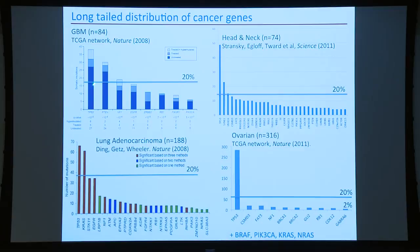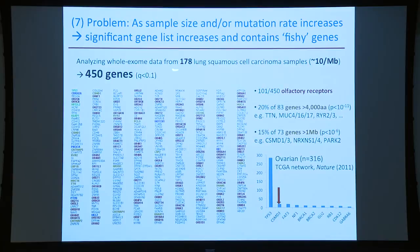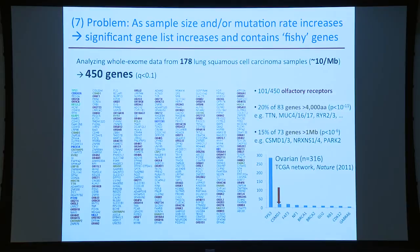Only a few genes have mutations in more than 20% of patients; most cancer genes are mutated in a smaller fraction. When we ran MuteSig on 180 lung cancers with a typically high background rate, we found 450 significant genes — including 100 olfactory receptors. We didn't believe olfactory receptors in lung tissue could cause cancer, so something was wrong with our analysis, and we also found very long genes and ones with large genomic territory.